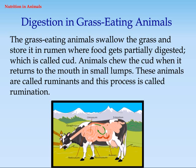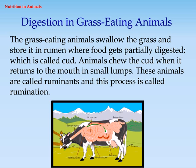Digestion in grass-eating animals: grass-eating animals swallow the grass and store it in the rumen, where food gets partially digested — this is called cud. Animals chew the cud when it returns to the mouth in small lumps. These animals are called ruminants, and this process is called rumination.